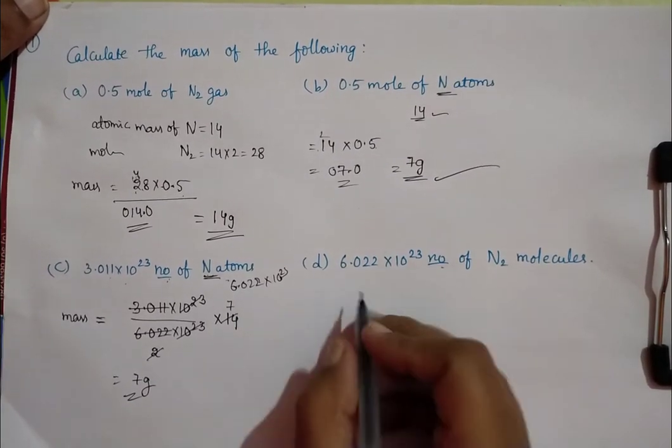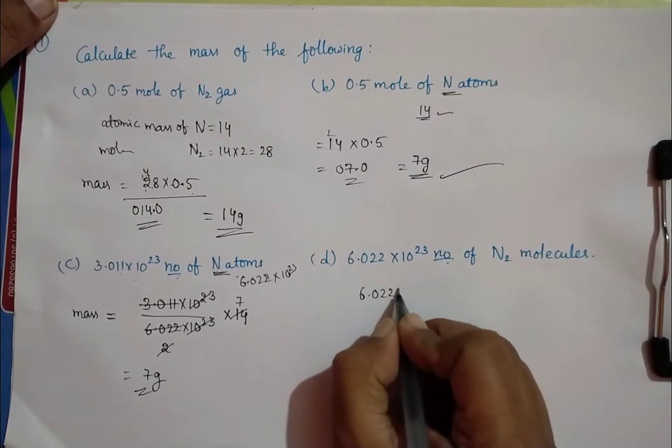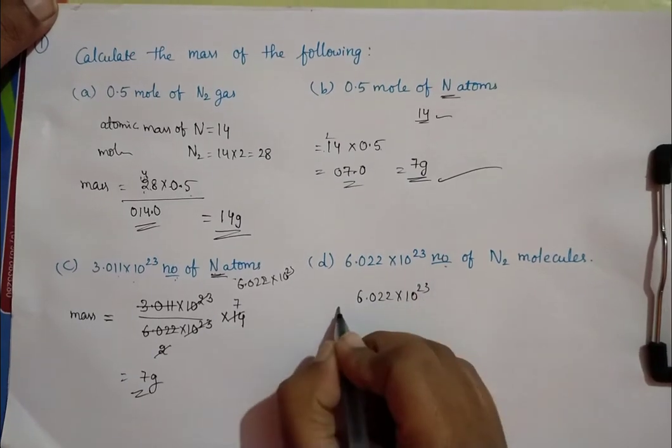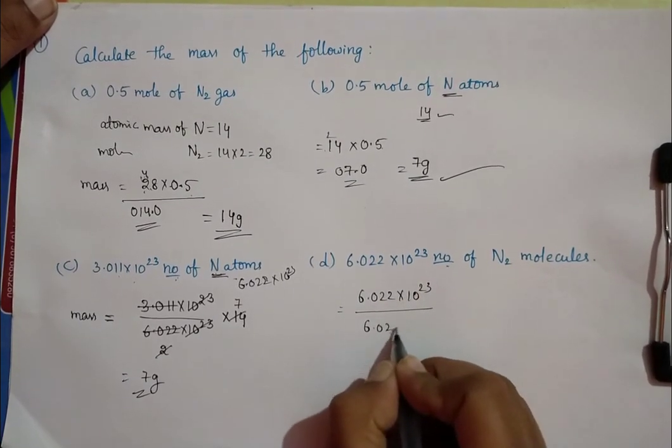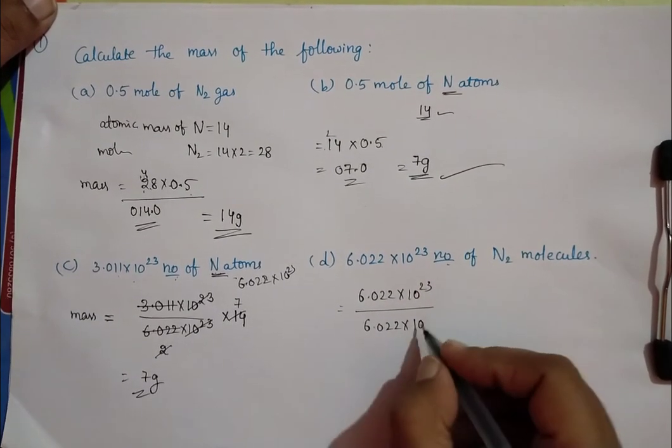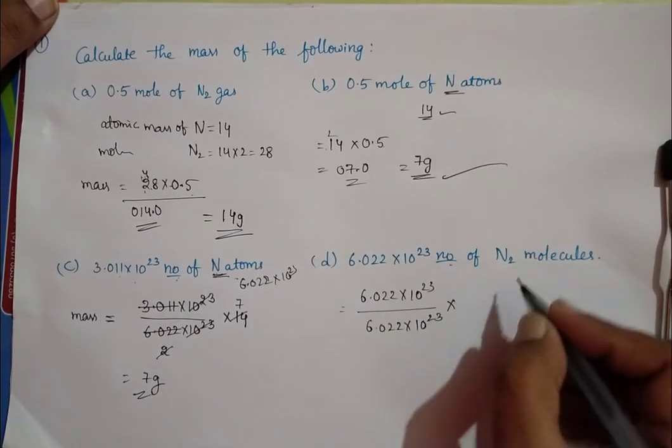In the same way, we have to solve this. So, that is 6.022 into 10 to the power of 23 by number of particles 6.022 into 10 to the power of 23 into molecule.